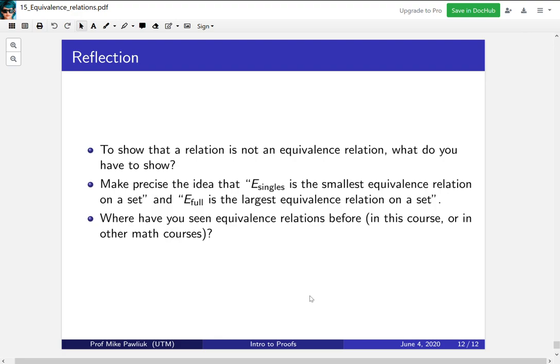Finally, let's take a moment to reflect. To show that a relation is not an equivalence relation, what do you have to show? Make precise the idea that E-singles is the smallest equivalence relation on the set, and make sense of E-full is the largest equivalence relation on the set. What do we mean by smallest and largest in this setting?